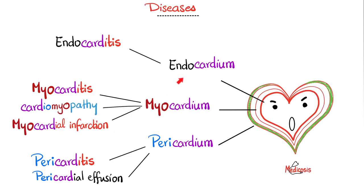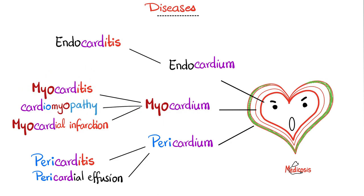Diseases of the endocardium include endocarditis, such as bacterial endocarditis, fungal, viral, parasitic, etc. Next, we have the myocardium: myocarditis, myocardial infarction, and cardiomyopathy. Today we're talking about myocarditis. Diseases of the pericardium include pericarditis and pericardial effusion.